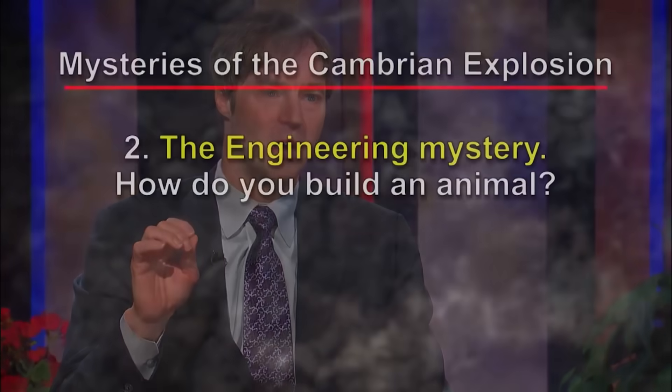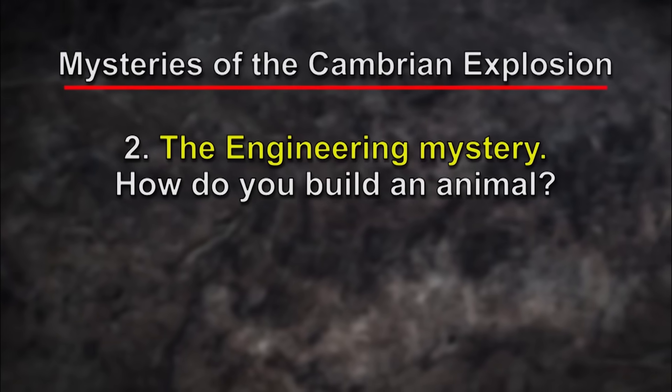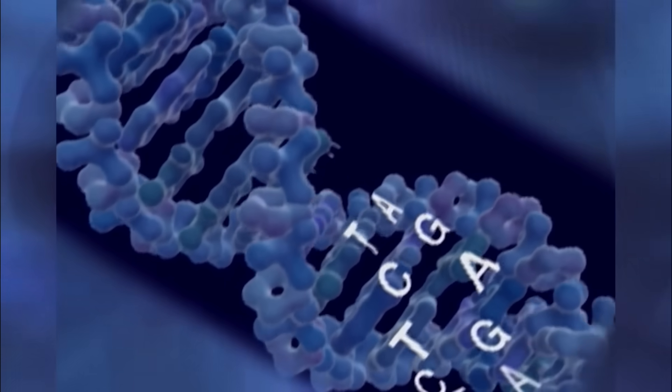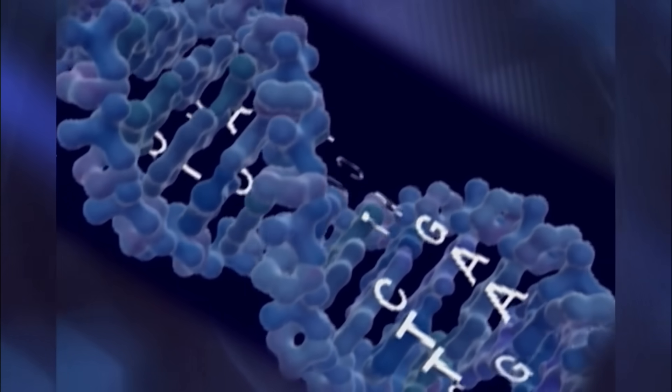But there's an even deeper mystery — the engineering mystery: how do you build an animal? How would the evolutionary process build an animal, especially on such a compressed time scale? This mystery has been made much more acute by discoveries in molecular biology about the importance of information — digital codes stored in the DNA molecule — to building animals. As we've come to appreciate that building animals requires vast sections of digital information, essentially assembly instructions, the Cambrian explosion becomes an engineering problem: where would all that information come from?